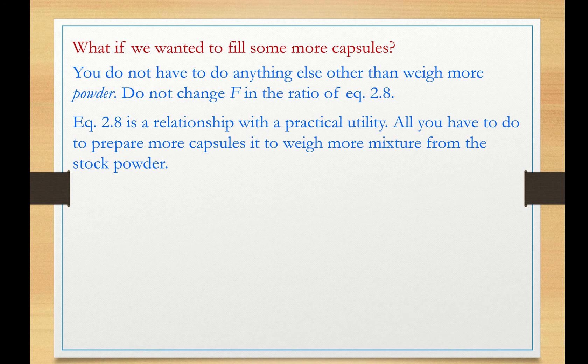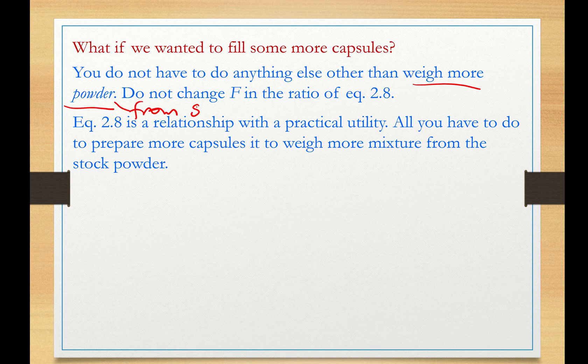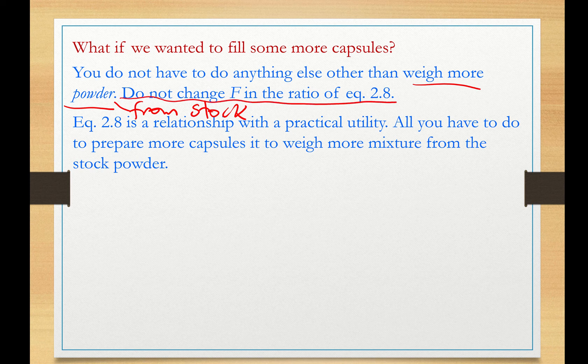So what do you do if you want to fill more capsules? Just weigh more powder from stock. You don't have to do any other calculations. Simple as that. Do not change F in the ratio of equation 2.8. You don't have to do that. So equation 2.8 is a practical utility equation. If you need to fill more capsules, use more stock. Simple as that.